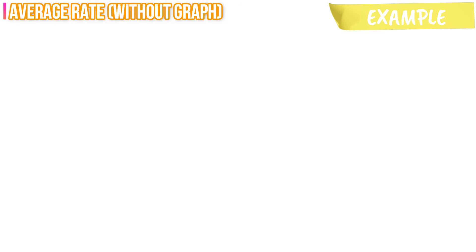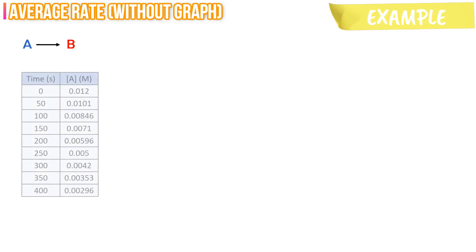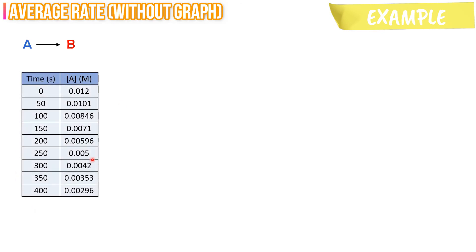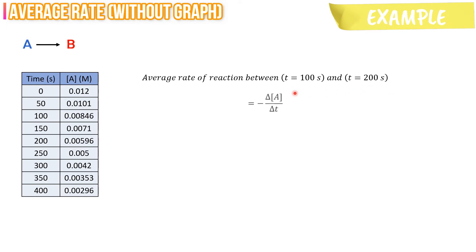The average rate of reaction can also be calculated without plotting the graph. For the same reaction, we can calculate using the values in the table straight away. Let's calculate the average rate of reaction between T equals to 100 seconds and T equals to 200 seconds using the same formula: average rate of reaction equals to negative delta A over delta T. Negative delta A over delta T is equivalent to negative A1 minus A2 over T1 minus T2.